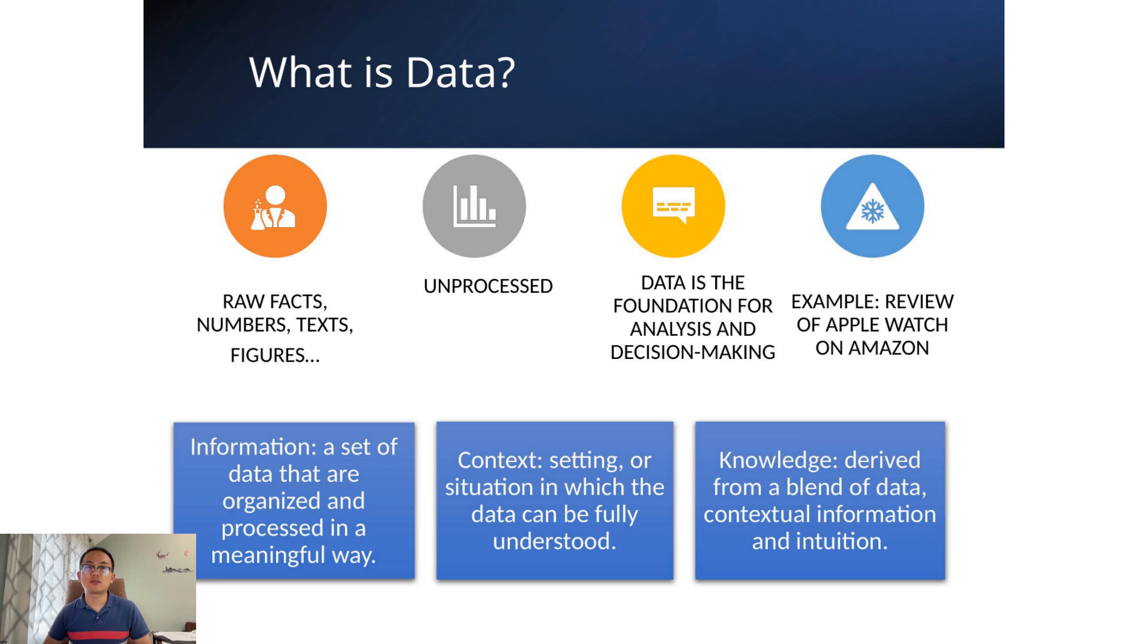Now let's introduce three other important terms: information, context, and knowledge. Data are just raw facts. When we organize those facts in a way that makes sense to us in a specific situation, they become information. Context is the setting or background that helps us better understand the data, like the situation where it was collected. So in short, information is data plus context. And finally, knowledge comes from combining data and context with experience and intuition.